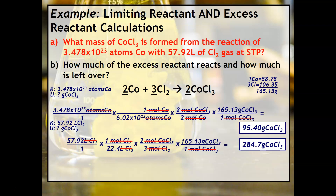Both of these amounts cannot be produced. The one that produces the greater amount means it is in excess. Therefore, 284.7 grams isn't what's produced — the 95.40 grams of cobalt-3 chloride is. That means cobalt is the limiting reactant and chlorine is the excess reactant.